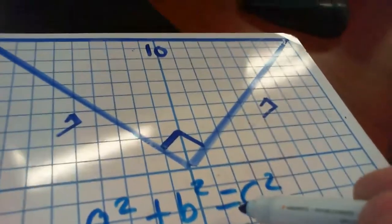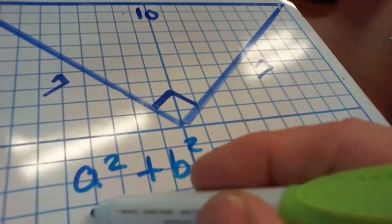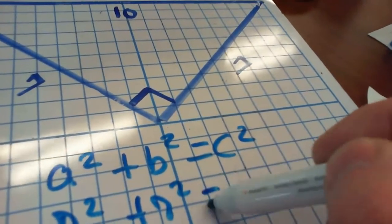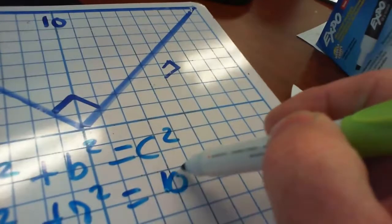So what are the two short sides that hook on to the right angle here? Well it's 7. So 7 squared plus 7 squared. Does that equal 10 squared?